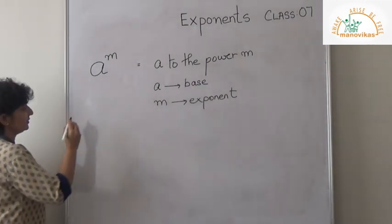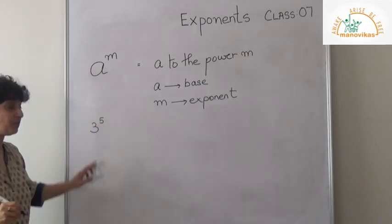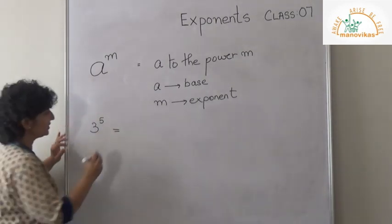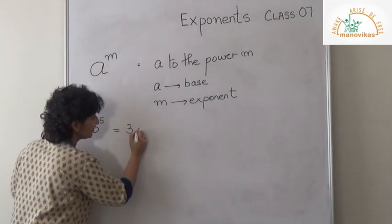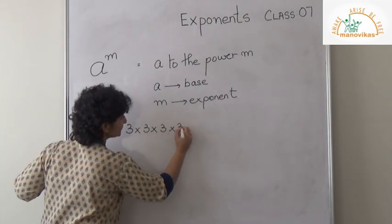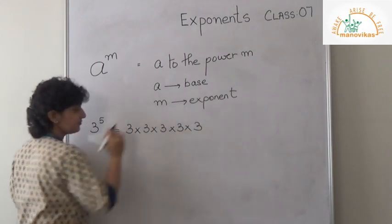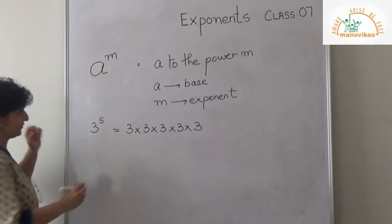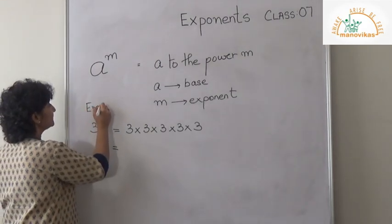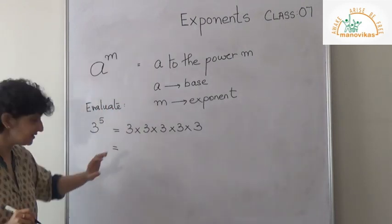Let me give you an example. For example, if I have 3 to the power 5, what does this mean? This means I will multiply 3 five times. If they say evaluate, that means I need to find the value.